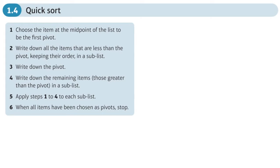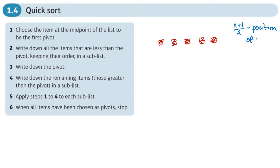We have a number of values — each block represents a number. What we need to do is find the middle of that list. If there are n numbers, we do n plus one divided by two, which gives us the position of what we call the pivot. This applies when n is odd.